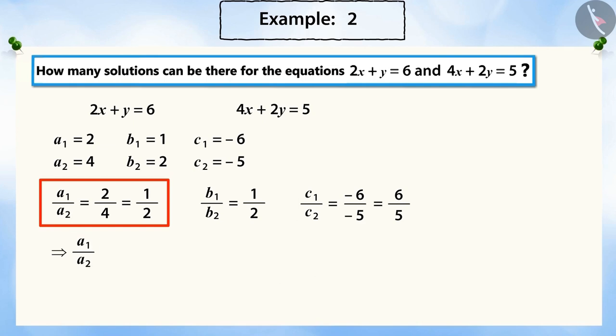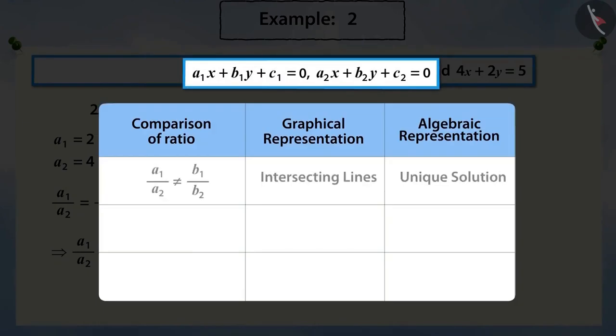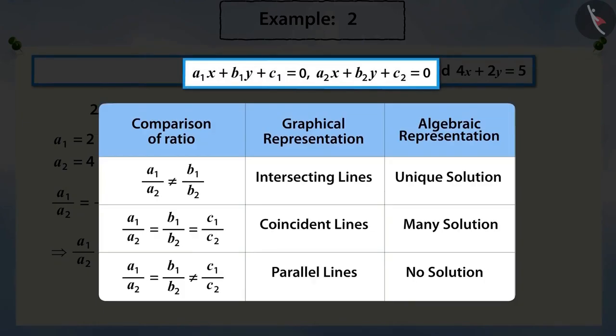We can see that here a1 divided by a2 is equal to b1 divided by b2, but that is not equal to c1 divided by c2. In the previous video, we studied the behavior of the given lines of a pair of linear equations, according to which we say that the given linear pair represents parallel lines which have no solution.